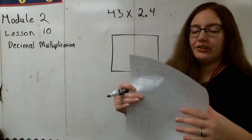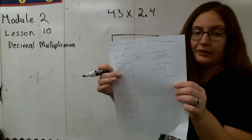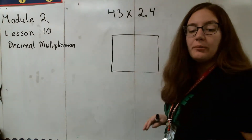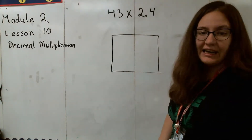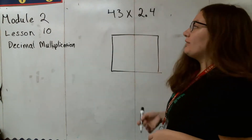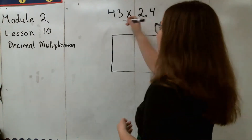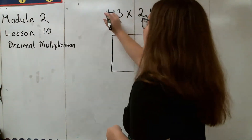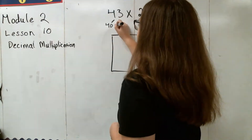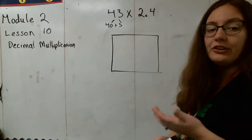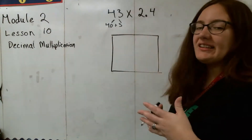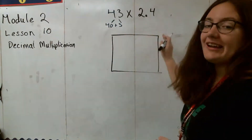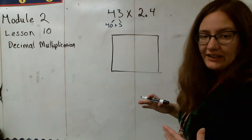We're going to start off with, in your notes, the very first problem: 43 times 2 and 4 tenths. You'll notice that I already have your area model set up, but just follow along with me so you can see how I set that up. We start with 43, and as usual I will split it up into expanded form: 4 in the tens, so 40, and 3 in the ones. Now you'll notice that I took this bigger number and put it on the side instead of on top — so that's going to be our first difference.